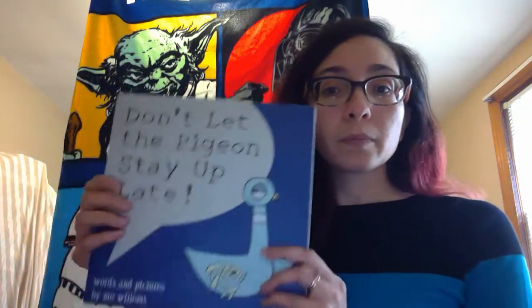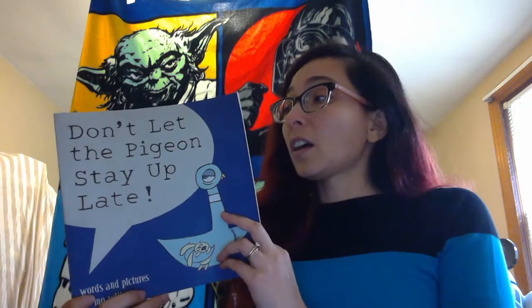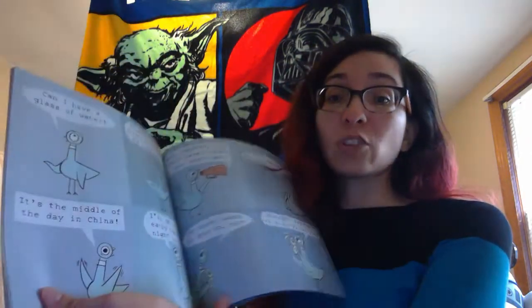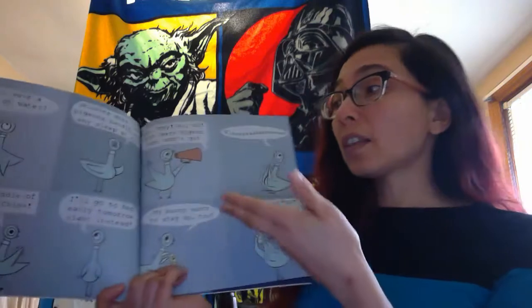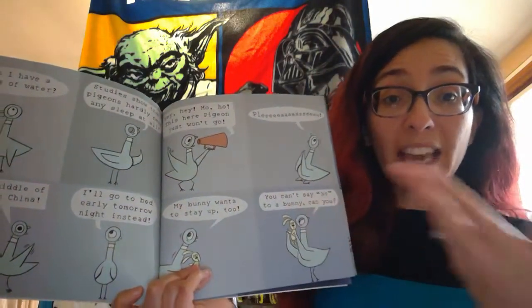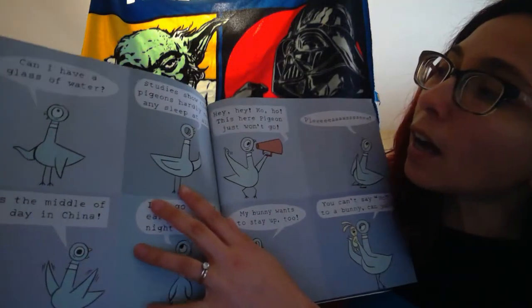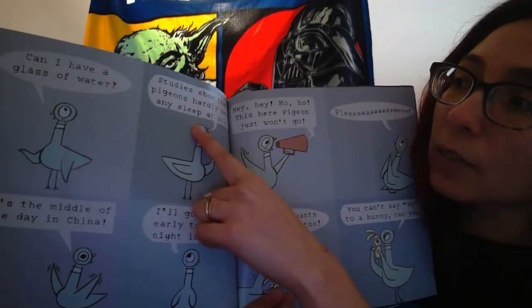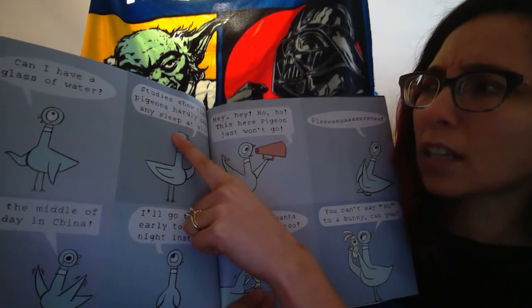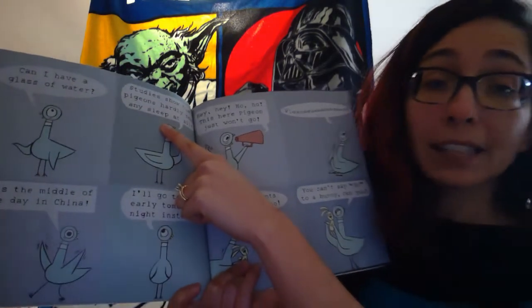There's a really easy example and it might have been hiding. You might have read this book before when you were smaller — Don't Let the Pigeon Stay Up Late or Don't Let the Pigeon Ride the Bus. Any of the pigeon books. The pigeon is trying to persuade you to let him stay up. Here is a good example of evidence he gives: 'Studies show that pigeons hardly need any sleep at all.' That's his evidence.